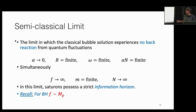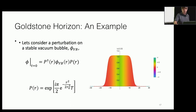In this limit, F — which is the analog of the Planck scale, exactly as for black holes — goes to infinity. In this limit the saturon, just like a black hole, possesses a strict information horizon: there is no way to extract information from the interior.